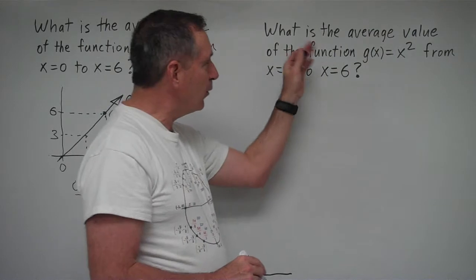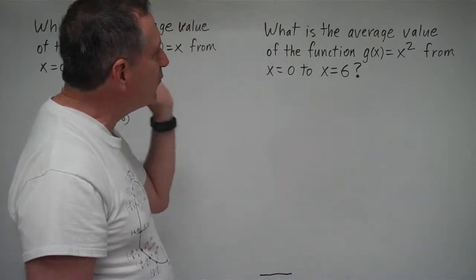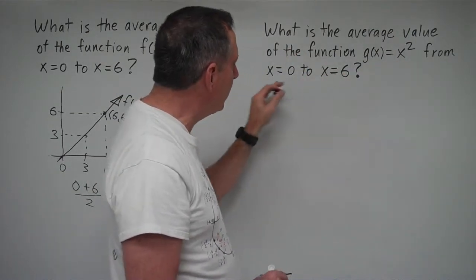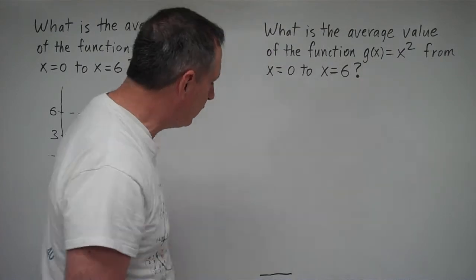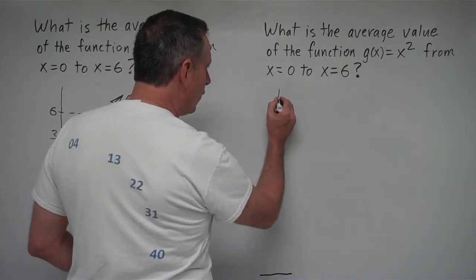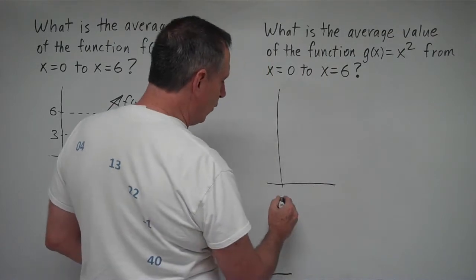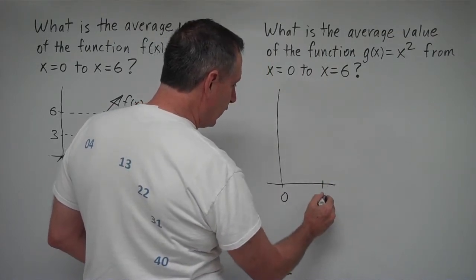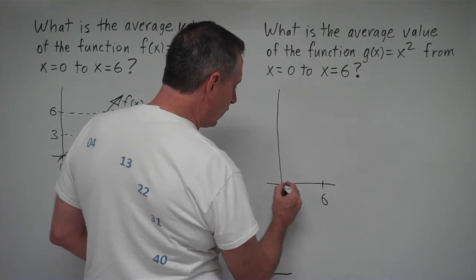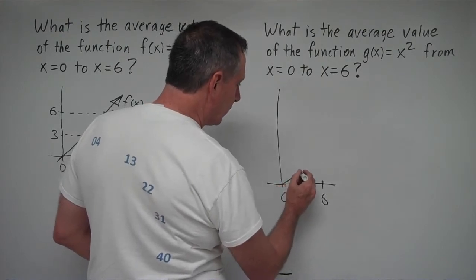But we have this situation over here to the right. What is the average value of the function g(x) equals x squared from x equals 0 to x equals 6? And for this one, this is the quadratic parent function, y equals x squared, and we're going to go from 0 to 6, and the function is going to look something like this.